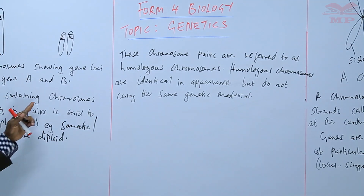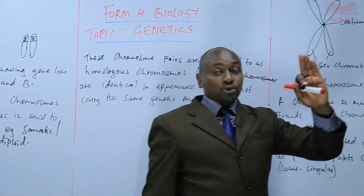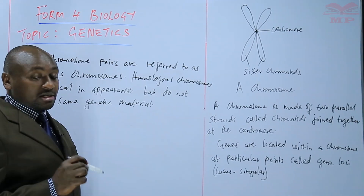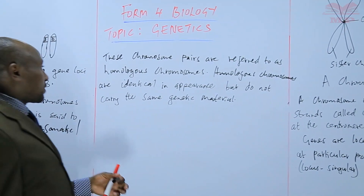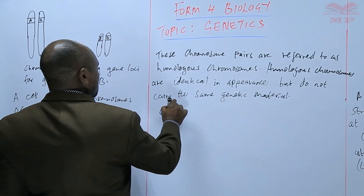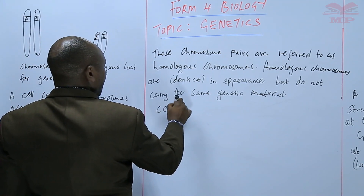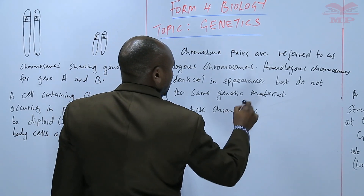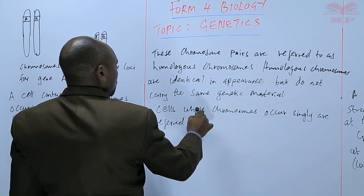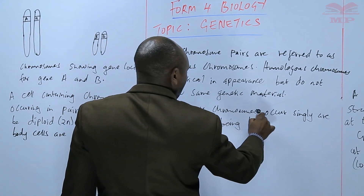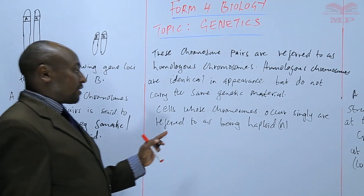We also have cells that contain chromosomes that do not occur in pairs but exist singly. We refer to that state as being haploid — from the word half. It is half of the diploid state. Cells whose chromosomes occur singly are referred to as being haploid, denoted with N. For example, gametes are haploid; they have half the number of chromosomes.